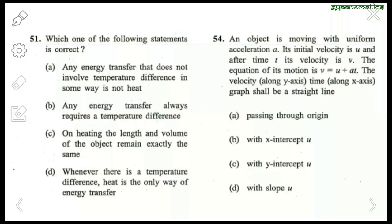Now the very important part — GK or General Awareness, Part B. Starting with question 51: which statement is correct about energy transfer? 'Any energy transfer that does not involve a temperature difference is not heat' — this is wrong. 'On heating, the length and volume of the object remain exactly the same' — also wrong, as both increase. 'Whenever there is a temperature difference, heat is the only way of energy transfer' — this is the correct statement.